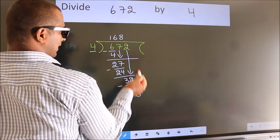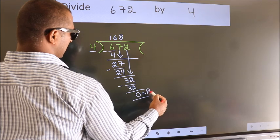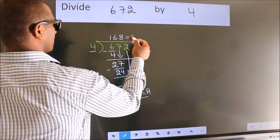No more numbers to bring it down. So, we stop here. This is our remainder. This is our quotient.